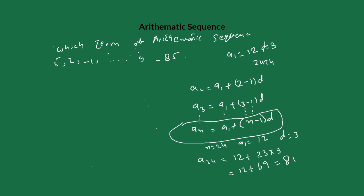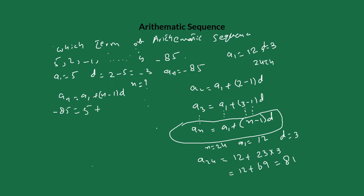The first term of the sequence is 5. The common difference is second term minus first term: 2 minus 5 equals negative 3. The nth term a_n is negative 85, and we need to find which term it is — meaning we need to find the value of n. Write the formula: a_n equals a_1 plus (n minus 1) times d. Substituting: negative 85 equals 5 plus (n minus 1) times negative 3.